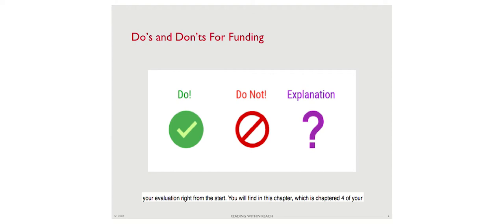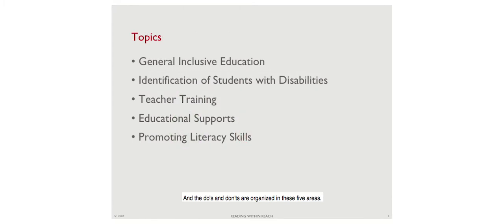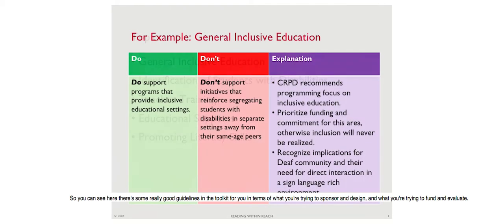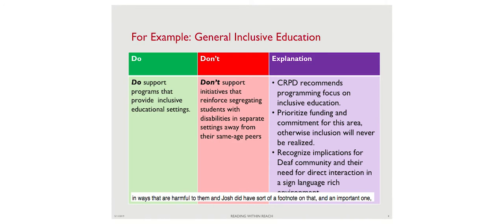We need to build evidence-based programming and find out what the evidence base is in our context, without reinforcing segregation or discrimination or causing stigma. Be very careful of your monitoring and evaluation designs right from the start. Chapter four of the toolkit - available on EduLinks, Google, or the GRN website - has a long list of do's and don'ts for funding work, organized in five areas: general inclusive education, identification of students with disabilities, teacher training, educational support, and promoting literacy skills.